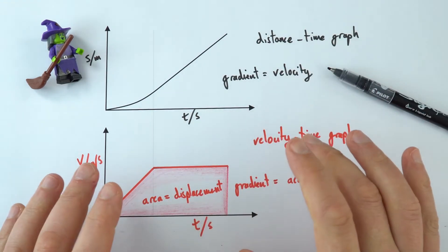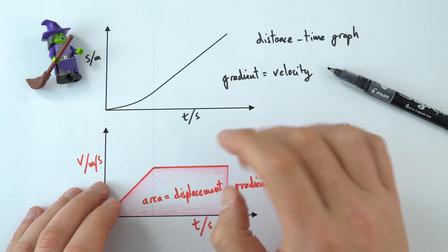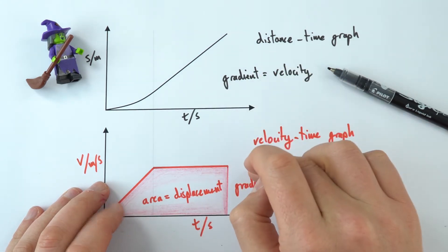So these are both really useful ways of visualizing the motion of an object. It is a little bit tricky sometimes, so just take care that you're looking at either a distance or a velocity-time graph.